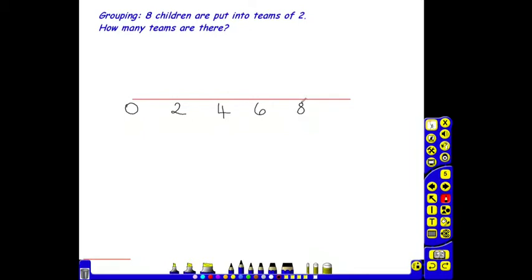The pupils can then count the number of groups of two by doing jumps along the number line. So we will see there is one group of two, two groups of two, three groups of two, four groups of two.